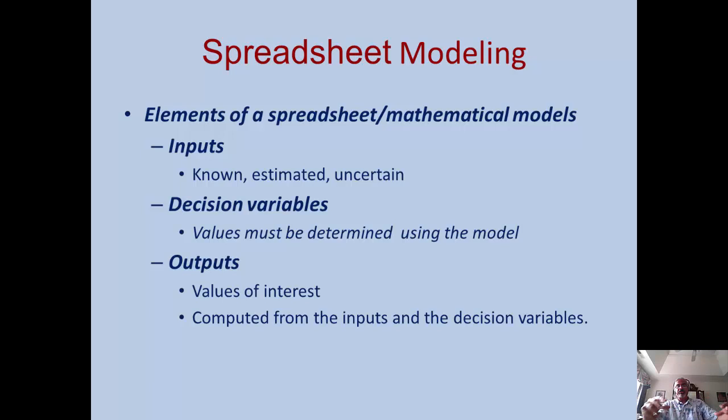And the output is something that you calculate from the decision variables. So for example, profit and cost that we just talked about. So if these are the quantities for the decision variables, then from those quantities you calculate some output values. The outputs are the values that we are interested in.